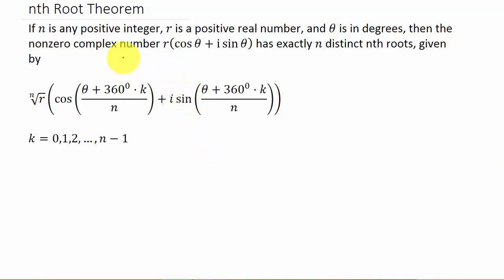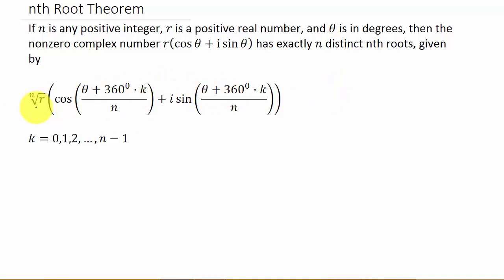So what do we mean by 'has exactly n distinct nth roots'? That would mean it would have four fourth roots, three cubed roots, two square roots, or five fifth roots. And the way that we find them is with this formula right here.